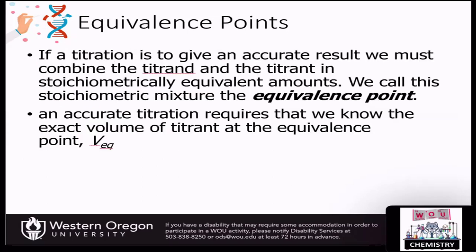The first thing we want to talk about is the equivalence point. These types of reactions use stoichiometry to determine the concentrations of an analyte in a sample. To do this, we're going to mix the titrant in with the titrand. The titrand is our sample that has the analyte in it, and the titrant is our known solution whose concentration we know.